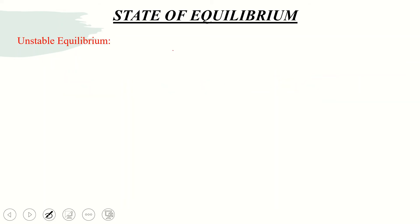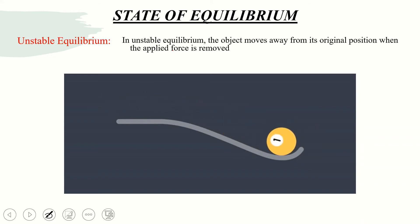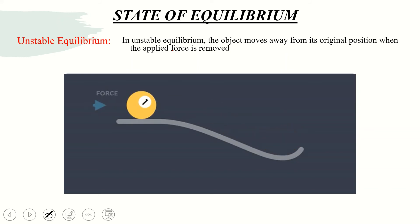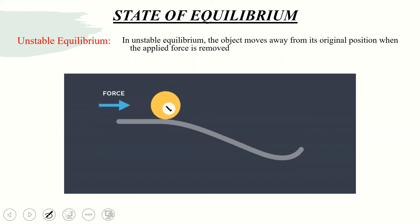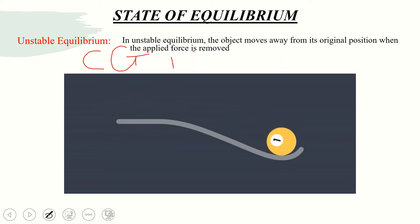Next we look at unstable equilibrium. As you can see from this video, when an object is disturbed from its original position, it moves away from its original position and does not return. The object moves away from its original position when the applied force is removed. For unstable equilibrium, the center of gravity is lower.